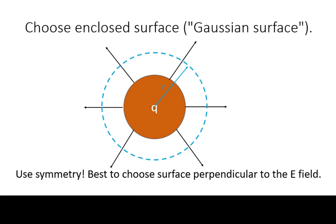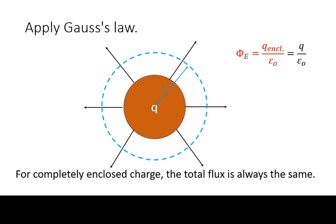Outside the charge, calculating the flux is a lot simpler because any enclosed surface will already have the total charge. Hence, if we apply Gauss's law, the total flux will always be the same.